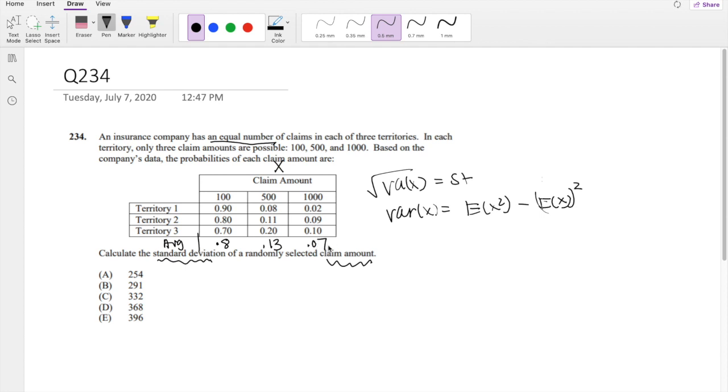Alright, and now actually we already have everything we need. So let's find the expectation first. The expectation is pretty easy, right? It's just p times x. So in our case, you just sum it up, all of them. So in our case, for 100, the probability is 0.8 times 100. For 500, the probability is 0.13 times 500 plus 0.07 times 1,000. So this adds up to, our expectation is 215.